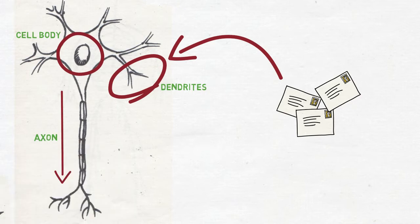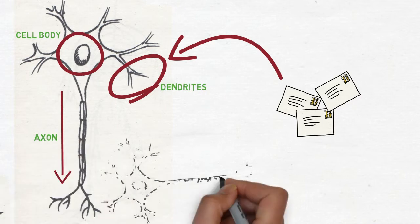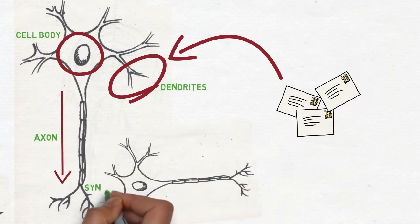To transmit those messages to other cells, the axons of one cell and the receivers of the others form a structure called synapse.